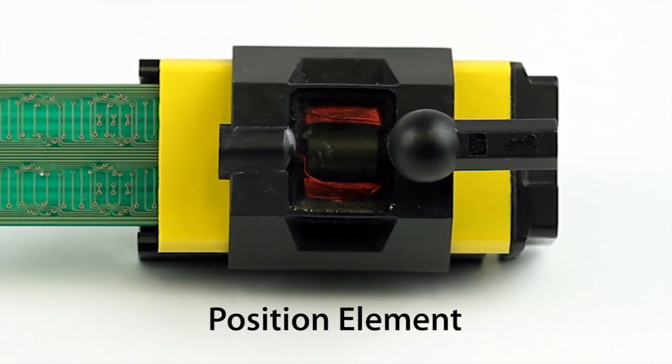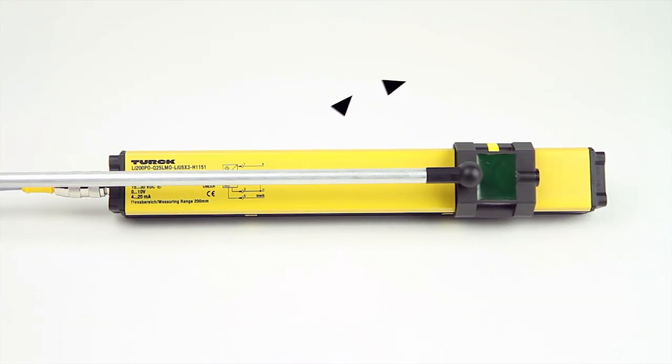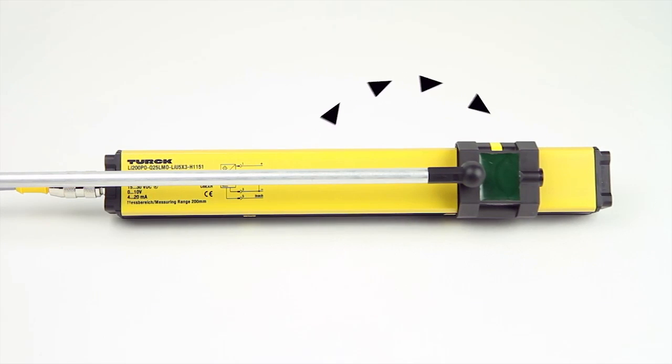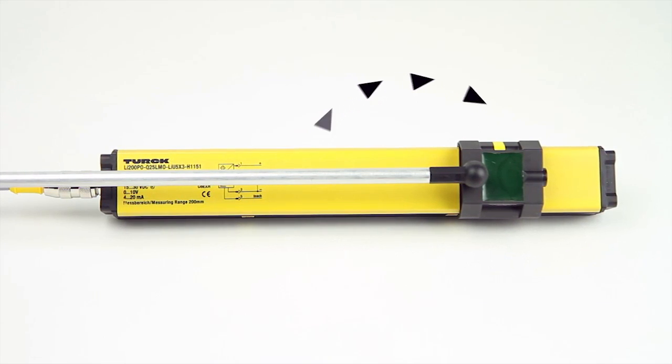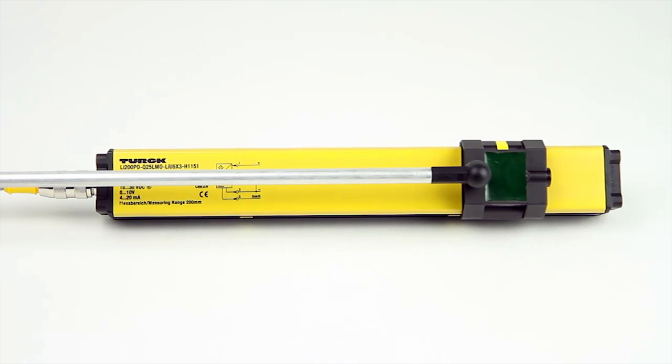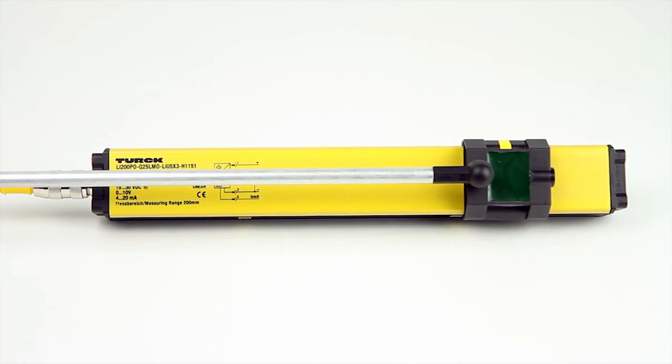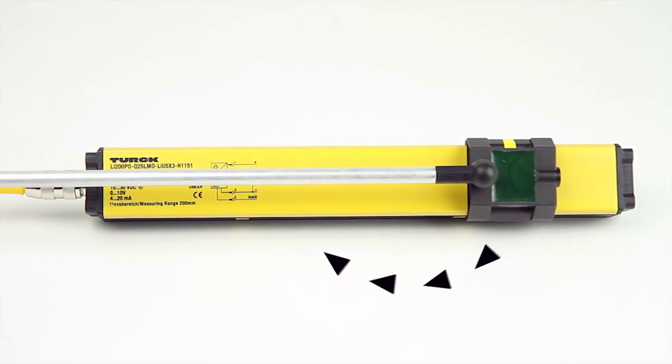The position element contains an inductor and a capacitor. First, the emitter coils are excited with a high-frequency AC field, which in turn charges the position element. The position element then resonates the charge into the receiver coils of the sensor.